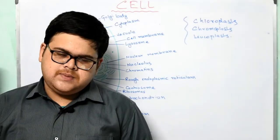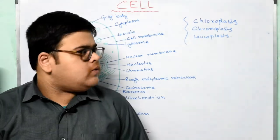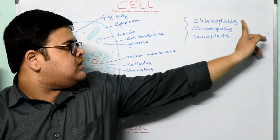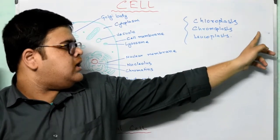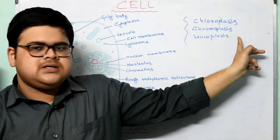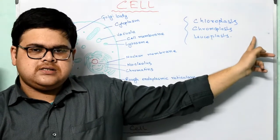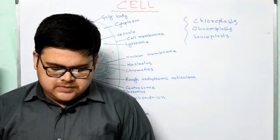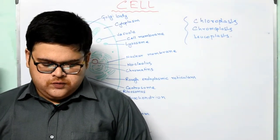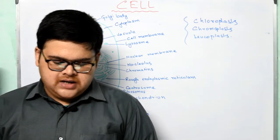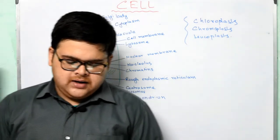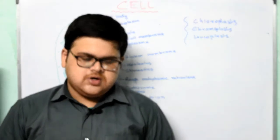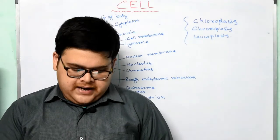Leucoplasts are colourless plastids. So chloroplast is green, chromoplast is coloured, and leucoplast is colourless. These are colourless plastids that store food in the form of starch, protein, and fat. They are found in roots, seeds, and other storage organs of the plant.